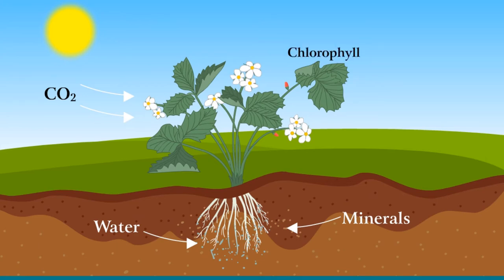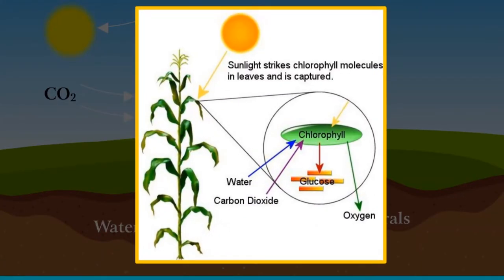Chlorophyll is the green pigment present in plants. Chlorophyll captures energy from sunlight and uses it to prepare food from carbon dioxide and water. The process of collecting simple substances such as water and minerals from the soil, and carbon dioxide from the air, utilizing sunlight as a source of energy, and converting these simple substances into complex food is known as photosynthesis. The word photosynthesis is derived from two words: 'photo' means light and 'synthesis' means to combine. During photosynthesis, light energy is converted into chemical energy. Plants absorb energy from the sun and use it to convert carbon dioxide and water into glucose and oxygen.